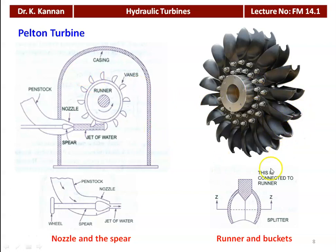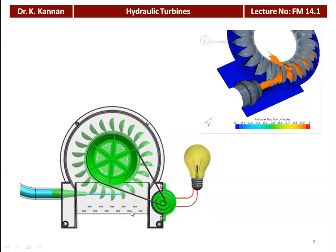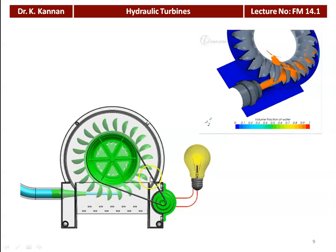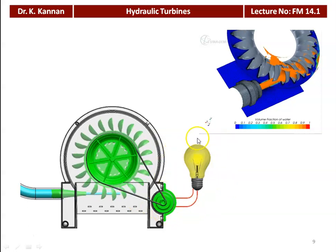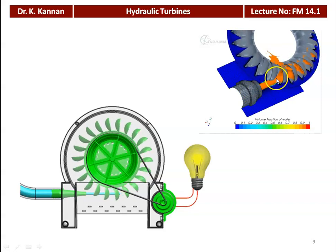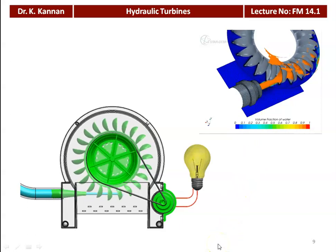Looking at the bucket: it has a hemispherical shape — two hemispherical halves — with a central metal ridge. The water jet strikes at the center and is deflected in both directions, leaving through the gap between adjacent buckets. This is how the Pelton turbine works. In a demonstration, the rotating runner is connected to an electrical generator which produces electricity to illuminate a bulb.